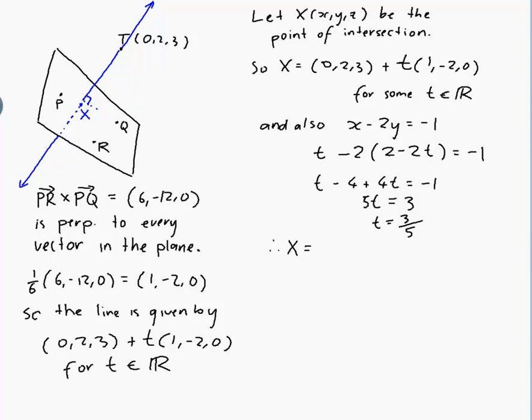And so therefore, X is equal to (0,2,3) + (3/5)(1, -2, 0). So, that would be 0 + 3/5, 2 + (3/5)(-2). So, 2 - 6/5, which would be 2 - 1 and a fifth, which would be 4/5. And 3 + 0(3/5), so that's just 3.